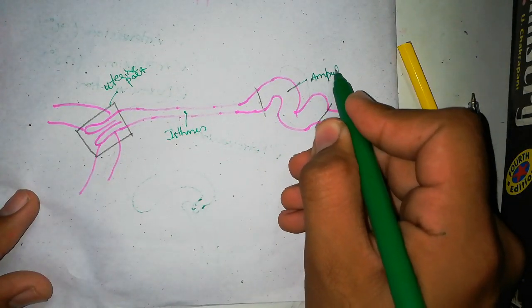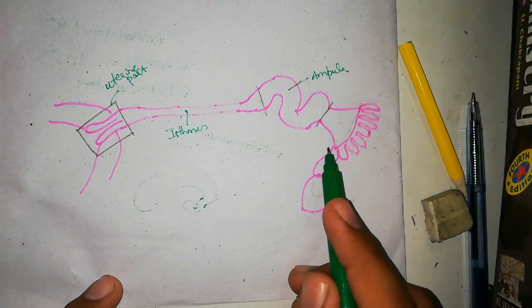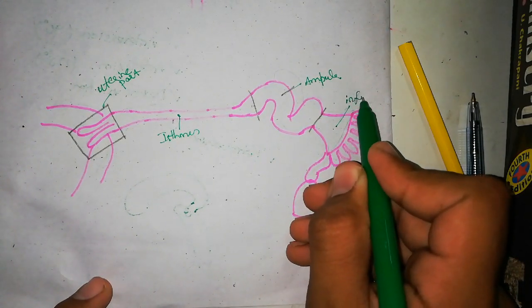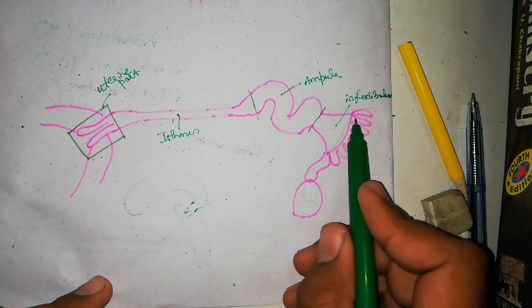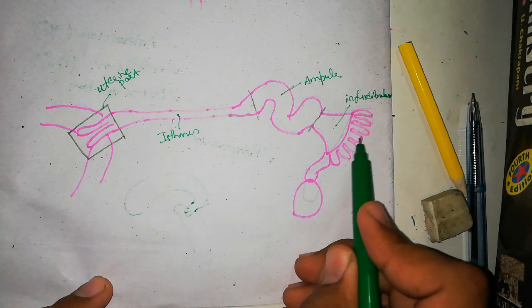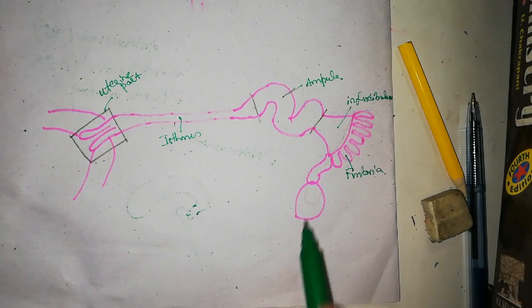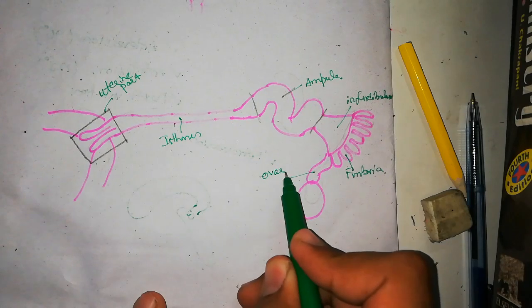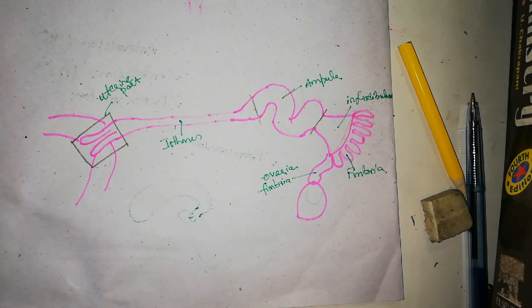Now the tortuous and expanded part will be called the ampulla of the fallopian tube. As the fallopian tube ends, it is in a funnel-shaped condition. This is called the infundibulum. The infundibulum has finger-like projections which are called fimbria, and one fimbria is long and is attached to the superior pole of the ovary. This is called the ovarian fimbria.